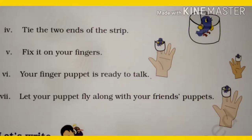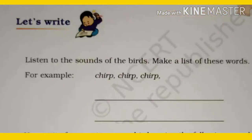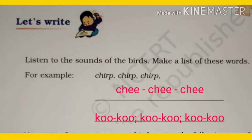So you can do this activity with the help of paper or cloth. Now know about the next heading — 'Let's Write'. The question is: listen to the sounds of the birds and make a list of these words. For example: chirp chirp chirp, chi chi chi, cuckoo cuckoo cuckoo.